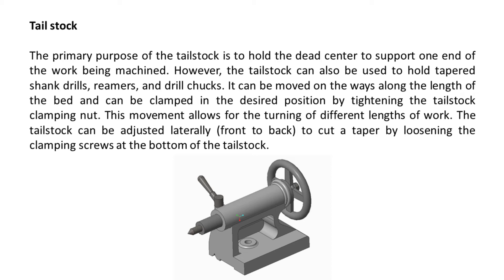The tailstock can be adjusted laterally, front to back, to cut a taper by loosening the clamping screws at the bottom of the tailstock.